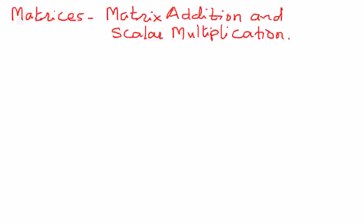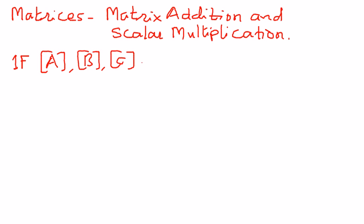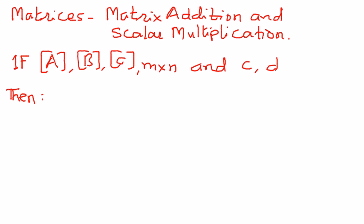Let us look at some properties related to addition and scalar multiplication, and then explain those properties with some examples. Let us say that if we have matrices A, B, C of size M by N, and C and D are any scalar quantities — scalar quantities are constants — then we can write some properties related to addition and scalar multiplication.